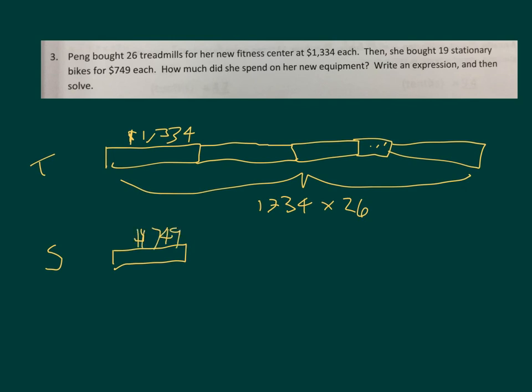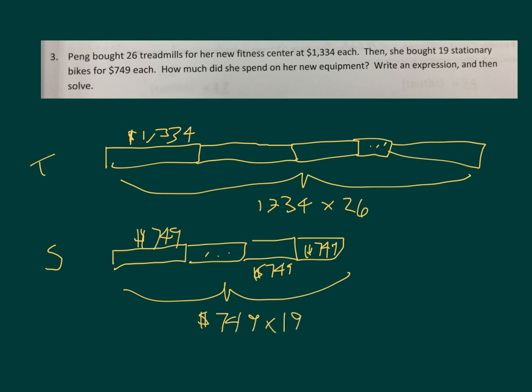So that's the amount for the treadmills. Now for the stationary bikes, there's 19 of them at $749 each. So we would take $749 and multiply it by what? Do you know? Did you say 19? There are your two expressions with tape diagrams to be able to solve this problem. The total amount that she ends up spending is going to be these two here combined to be able to add them together. So we take $1,334, multiply it by 26, and we add that together to $749 times 19.